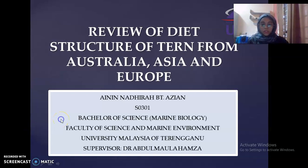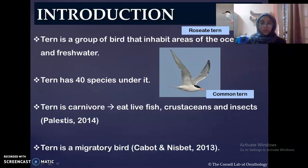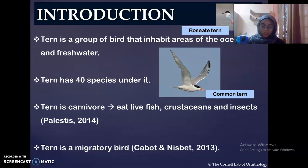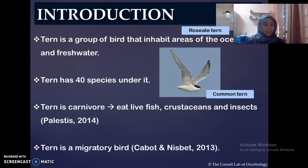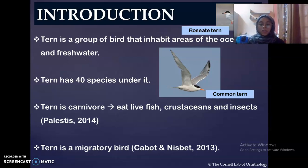For the introduction, tern is a group of birds that inhabit areas of ocean and freshwater. Tern is under family Sternidae and has 40 species under it, including roseate tern, common tern, little tern and many more. Tern is a carnivore bird — they eat live fish, crustaceans and also insects. Tern is also a migratory bird.